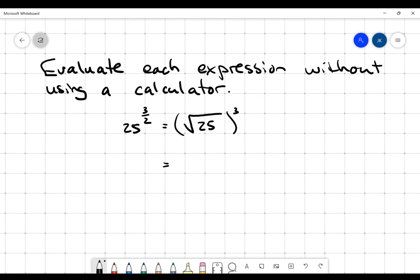Well, this is pretty straightforward because I know that the square root of 25 is going to be 5. And then all I have to do is cube the 5.